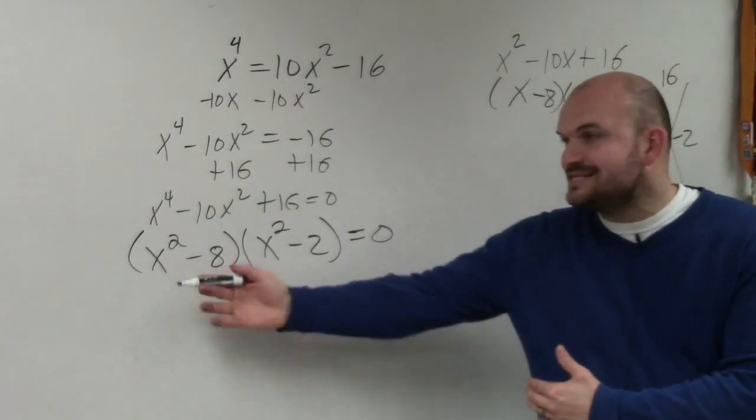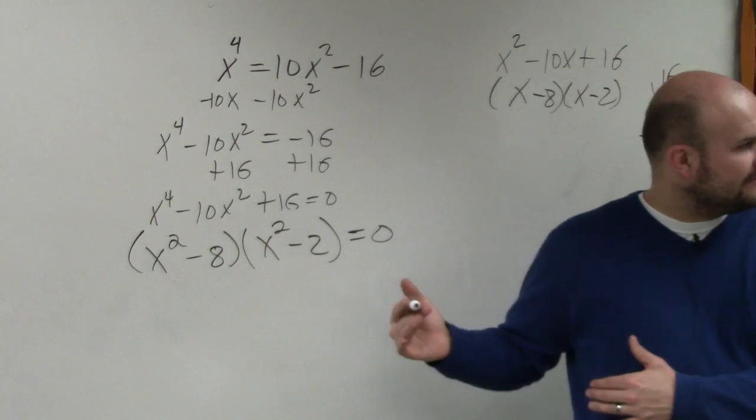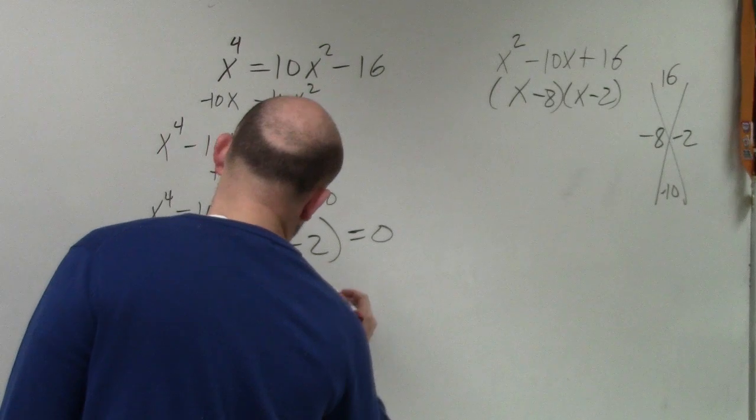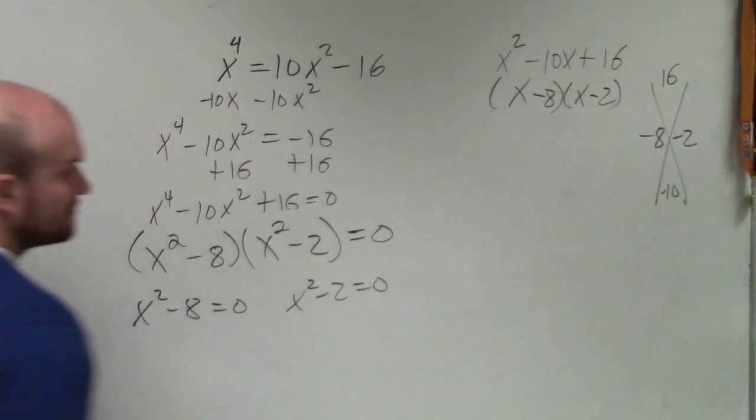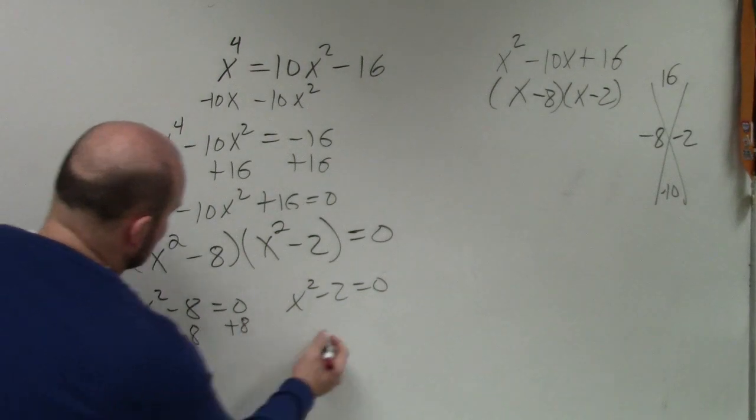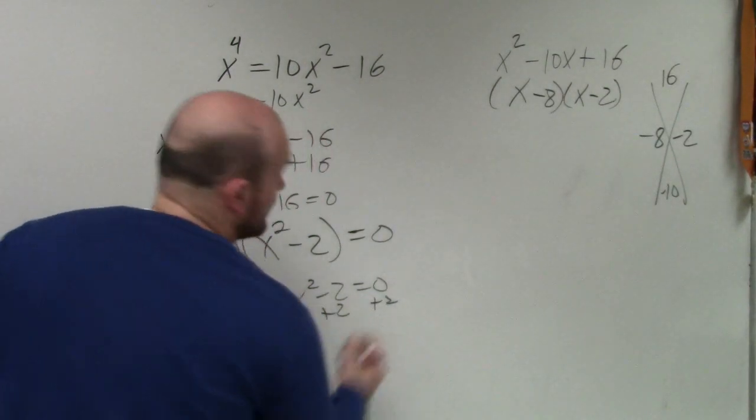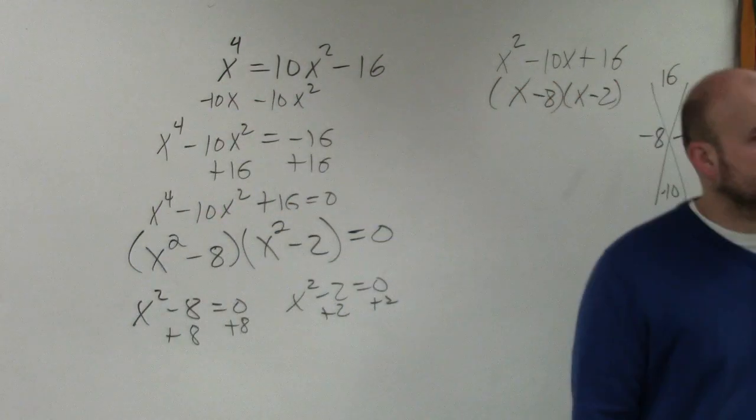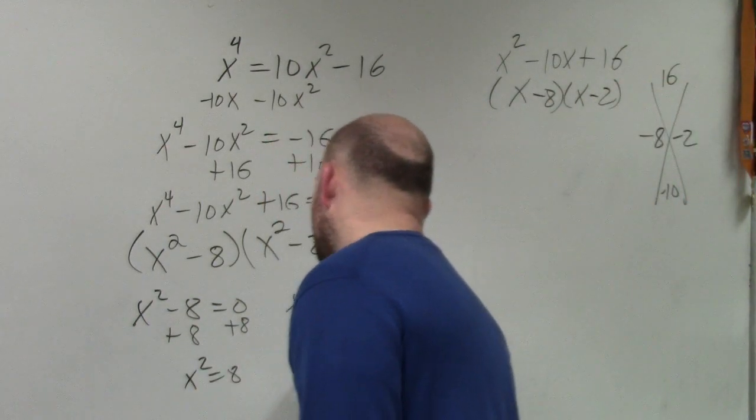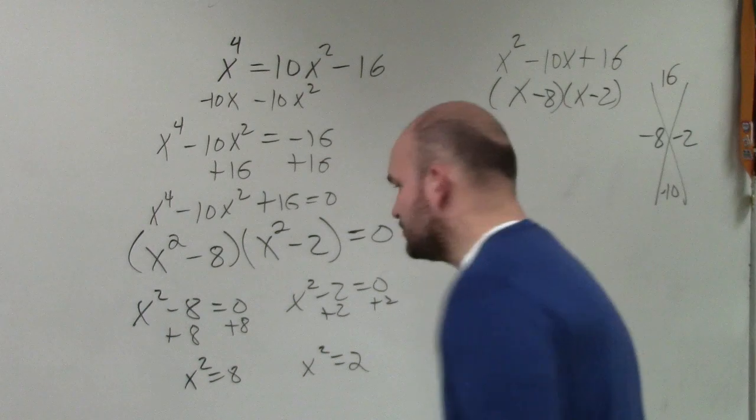Now we set them equal to 0. That's how we finish off the rest of the problem. x^2 - 8 = 0, x^2 - 2 = 0. Now we solve. Add 8, add 2. x^2 = 8, and x^2 = 2.